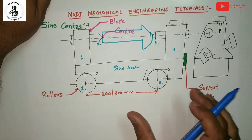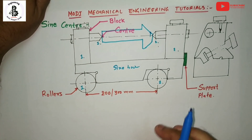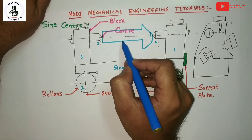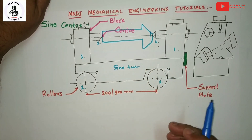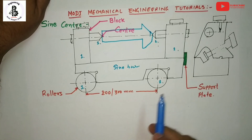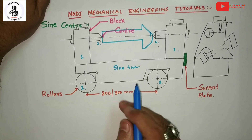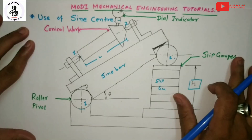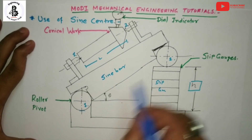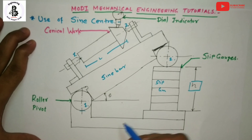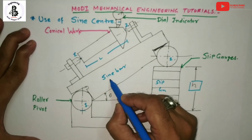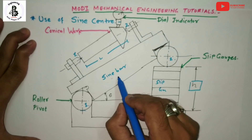The procedure for testing is the same as discussed for the sine bar. We will now see how the angle is measured for conical jobs with the help of the sine bar, slip gauges, and sine center. You can see the special arrangement of the sine bar with the slip gauges and sine center.